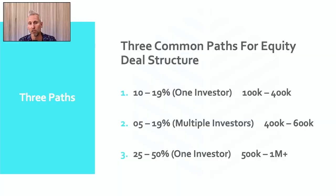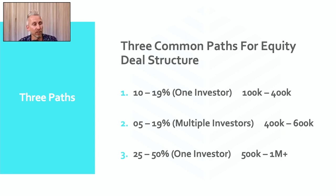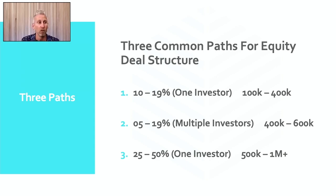I'm going to try and find one investor to raise 100 to 400,000. The second option — option two — is where you want to raise maybe a bit more money. Maybe it's 400 to 600,000, and you want to raise, say, 500 grand. You're having trouble finding one investor to come up with 500 grand because they want more than 19% but don't want to personally guarantee. So perhaps instead of 500 grand from one person, you raise 250 and 250 — maybe that's 12% and 12%, or 10 and 10, or 15 and 15.